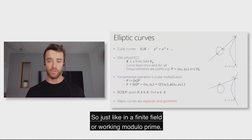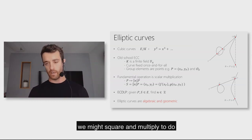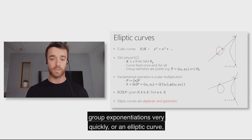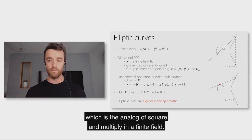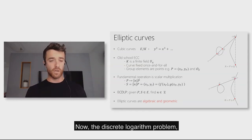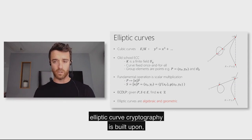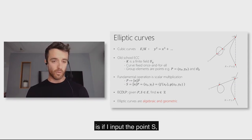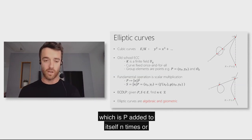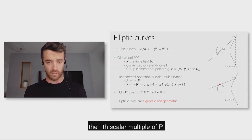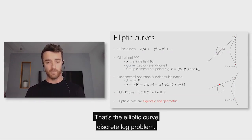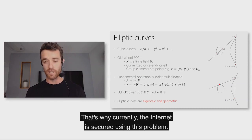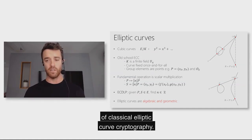We compute scalar multiples of a point quickly using double-and-add, which is the analog of square-and-multiply in a finite field. The discrete logarithm problem — on which all classical elliptic curve cryptography is built — is: given the point S = nP (P added to itself n times), and given S and P, what was the scalar n? That's the elliptic curve discrete log problem. We believe it's very hard, which is why the internet is currently secured using this problem.